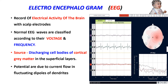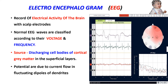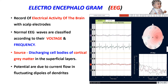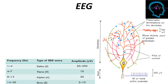Normal EEG waves are classified according to their voltage and frequency. The source is the cell bodies of the cortical gray matter in the superficial layers, due to the graded or summated post-synaptic potentials. These potentials are due to current flow in the fluctuating dipoles of the dendrites. The electrical activity can also be recorded from the surface of the cortex after opening the skull, which is called electrocorticogram.